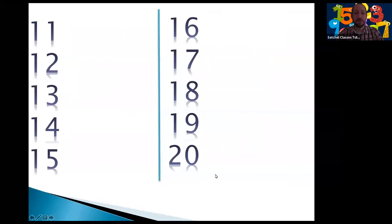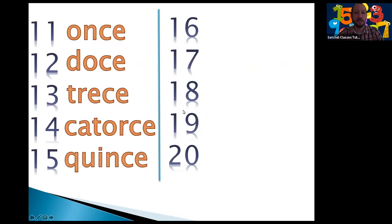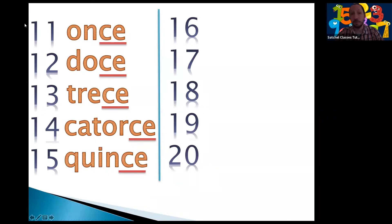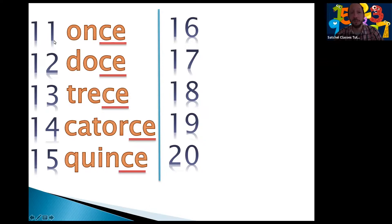What happens with numbers 11 through 15? We have once, doce, trece, catorce, quince. Notice the end of each one of those — the last two letters are always CE. So if you are able to remember the first two letters, everything is going to be much easier. For 11, just remember 'once.' The pronunciation is once, doce or doce, trece or trece, catorce or catorce, quince or quince.